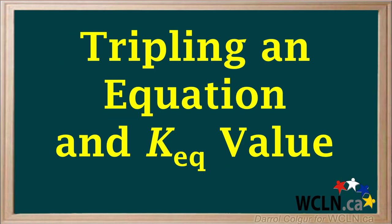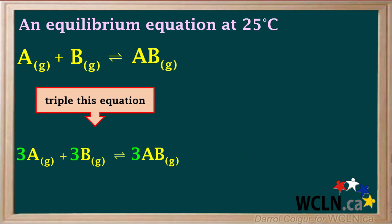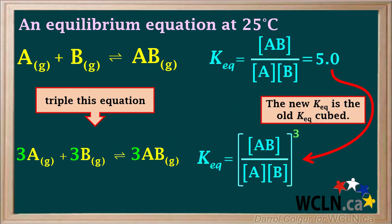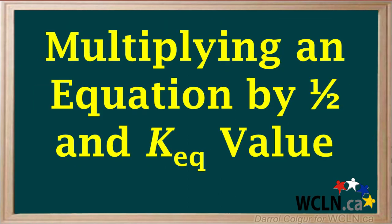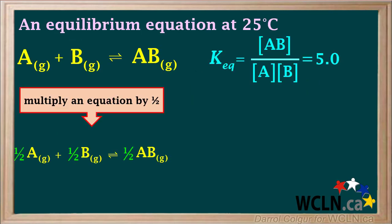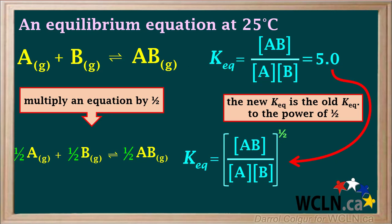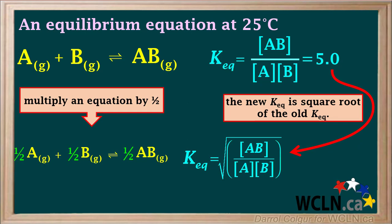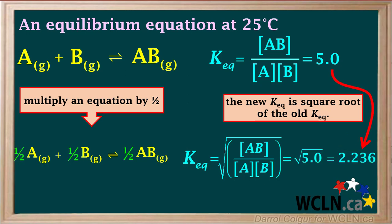If we triple an equation, the new KEQ will be the old KEQ cubed — 5 cubed equals 125, or 130 rounded to two significant figures. If we multiply an equation by one half, the new KEQ is the old KEQ to the power of one half, which is the same as the square root of the old KEQ — the square root of 5 is 2.236, which rounds to 2.2.